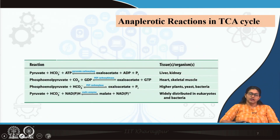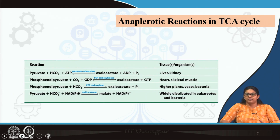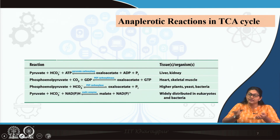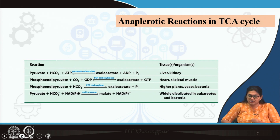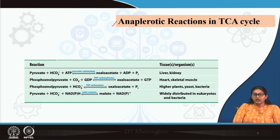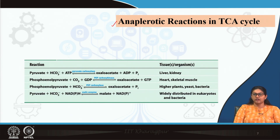In TCA cycle, intermediates are used up for synthesizing different other materials — they are siphoned off from the cycle — so they need replenishment. The intermediates should be replenished inside the cycle by different anaplerotic reactions. There are four important anaplerotic reactions which occur in TCA cycle.